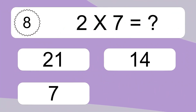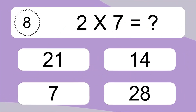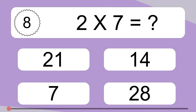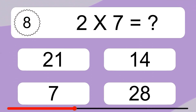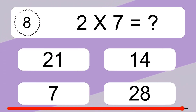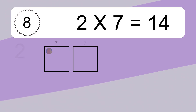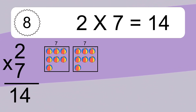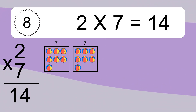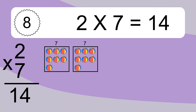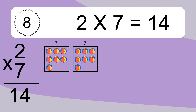Two times seven equals what? Two times seven equals 14. We have two boxes, and each box has seven colorful balls inside. If you count all the balls in all the boxes together, you will have two times seven balls. This equals 14 balls.